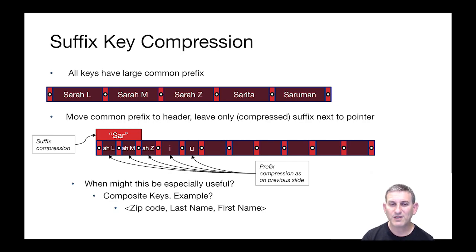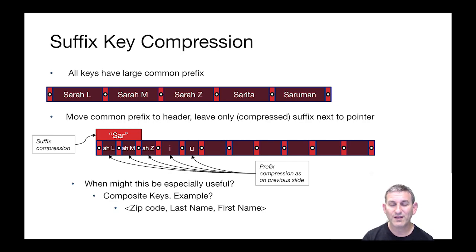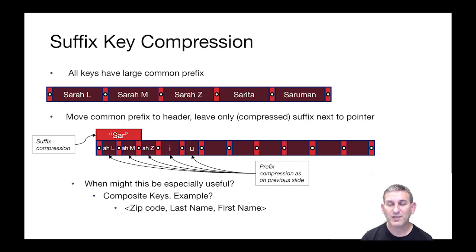Now when might this be especially useful? Actually, it's very useful with composite keys. Here's an example: we have an index on three columns — zip code, last name, first name. There are a number of people who live in the same zip code, and we don't want to store that zip code for each one inside the index. So we can store the zip code once and then have last name comma first names — which are more likely to differ — stored as the split keys. Composite keys are a great example where suffix key compression pays off because they're often on columns that don't have many distinguished values in the first column, but have distinguished values across the full set of columns.